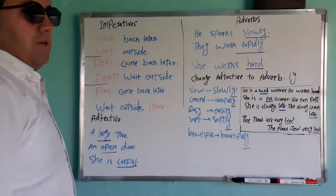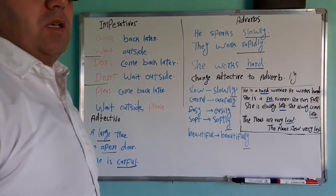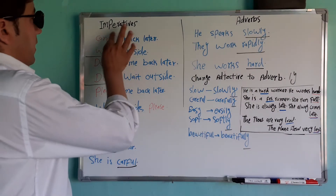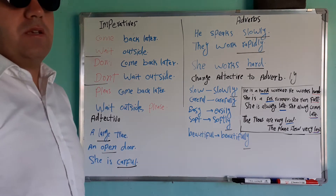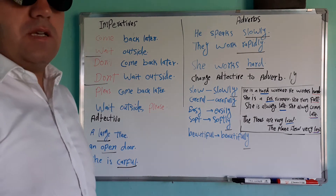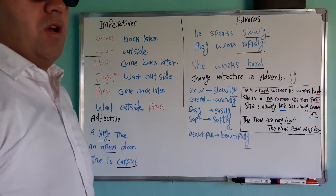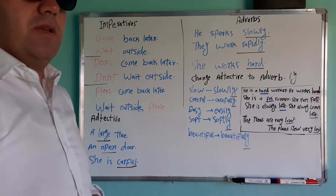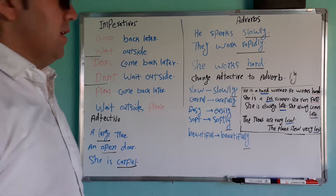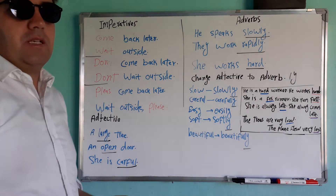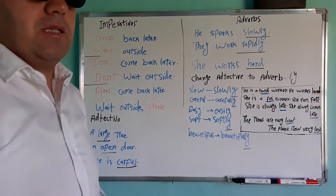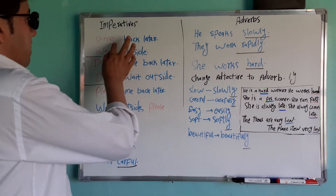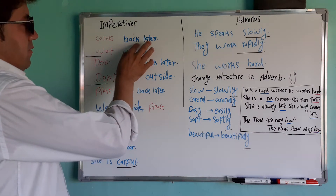First we will speak together about the imperative. What is imperative? Imperative is an order sentence — یک جمله امری هست. ما به شکل امری به کسی دستور میدیم و صحبت می‌کنیم — imperatives میدن.